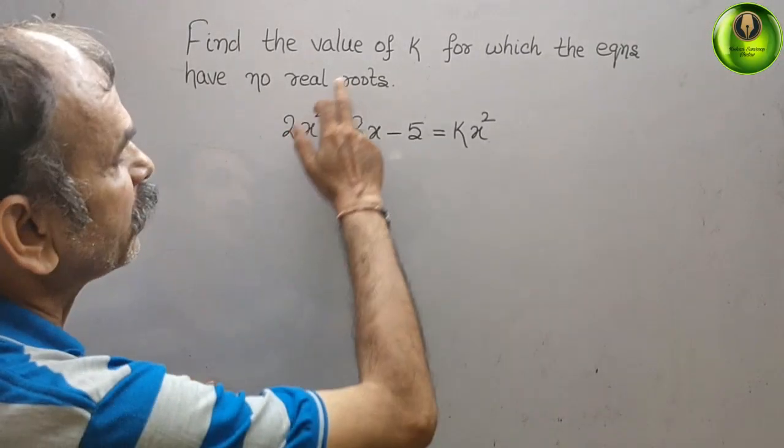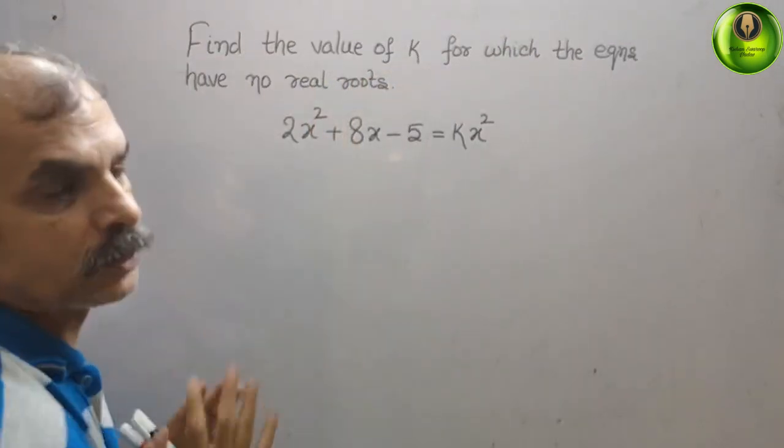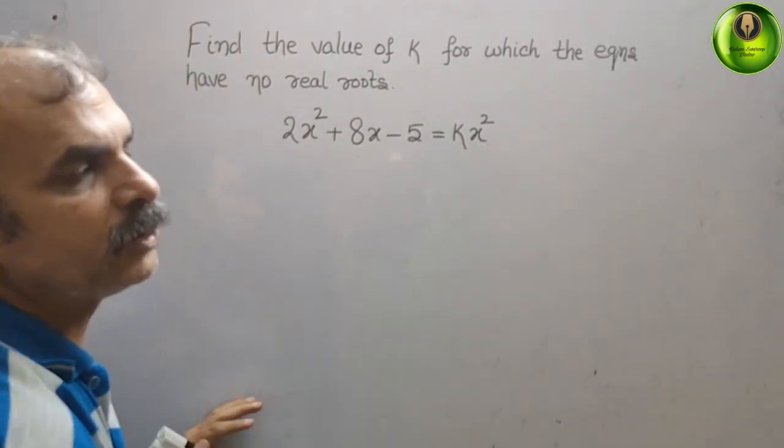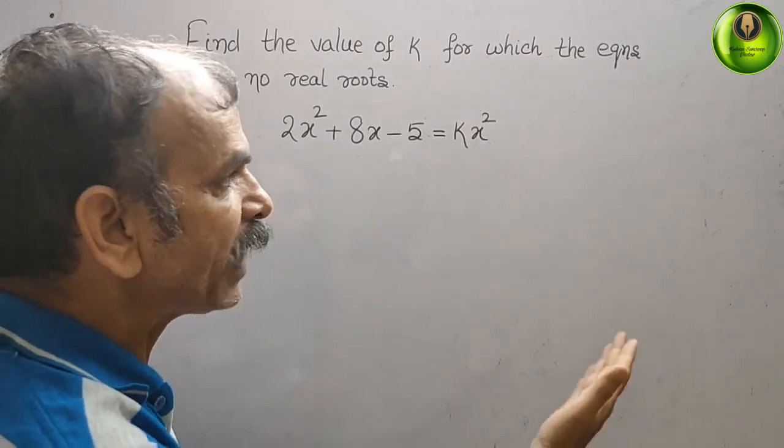Your question is find the value of k for which the equation have no real roots. They have given 2x square plus 8x minus 5 that is equal to kx square. First what we have to do, bring everything to your left side.